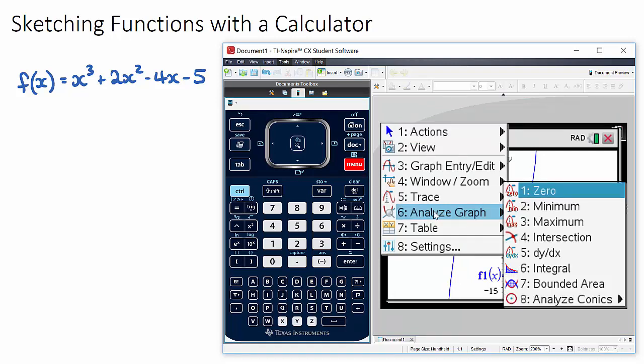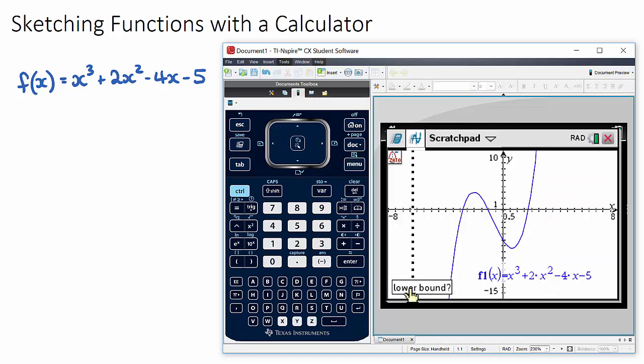Nearly all of these tools are in our menu and analyze graph section. Let's have a look at zero in the analyze graph - on your calculator it should be zero, which means x intercepts. If you click on zero, it'll ask you to find a lower bound. There are three x intercepts, so they want you to define which one you want.